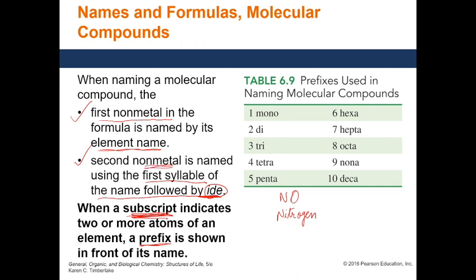Followed by the name of the second non-metal ending in '-ide', so it will be 'oxide'. The subscripts also need to be addressed — if there is no subscript written, that essentially means it is one. So NO means N1O1. Usually when the number of atoms is one we skip writing it, but that means one atom of nitrogen and one atom of oxygen, so for one we use the prefix 'mono'.